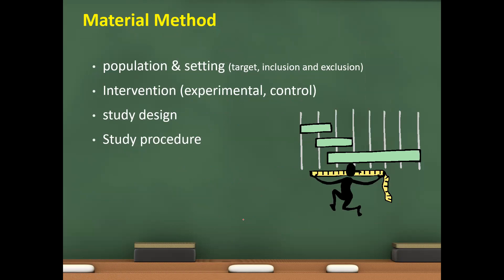So, material method include the population settings, target, inclusion, exclusion. So, our population will, of course, be the pediatric patient because they usually got the anesthesia.